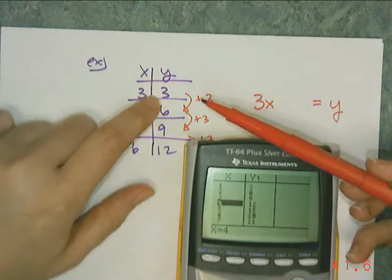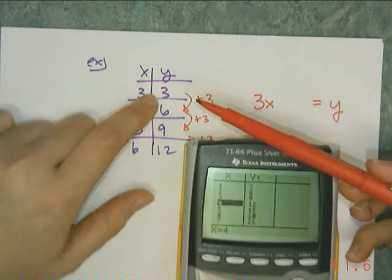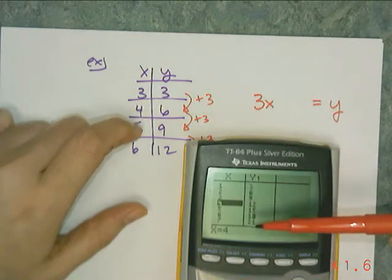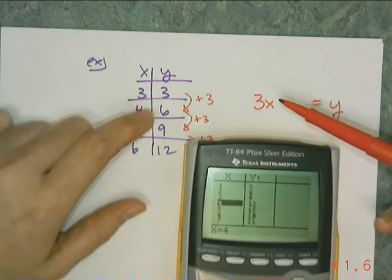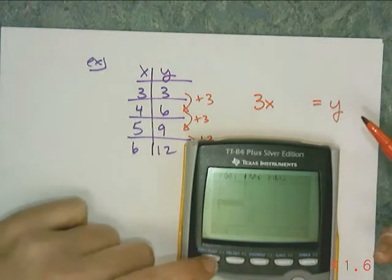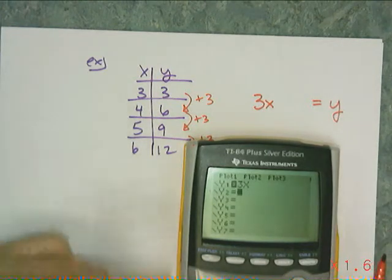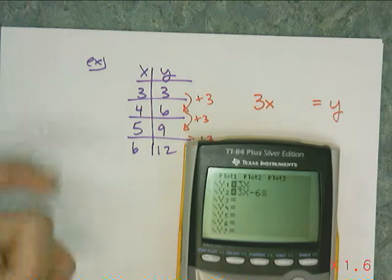Now if I look at this, these numbers in my table are actually 6 lower than everything that's 3x. So I know what I have to do to 3x to make it work. So if I go to y equals, and let's just compare, I'm going to take 3x and I'm going to subtract off 6.